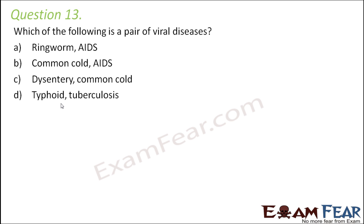Question number 13: Which one of the following is a pair of viral diseases? Ringworm and AIDS — ringworm is caused by fungi, so option A is incorrect. Common cold and AIDS is the correct option because both are viral diseases. Dysentery is caused by bacteria, so that option is wrong. Typhoid and tuberculosis are both bacterial diseases. AIDS is caused by the HIV retrovirus and common cold is caused by rhinovirus, so both are viral diseases.